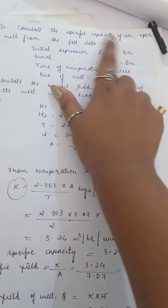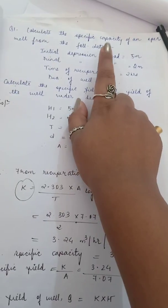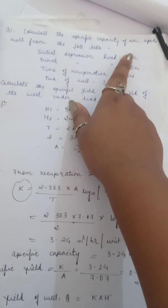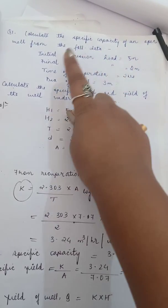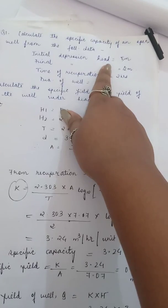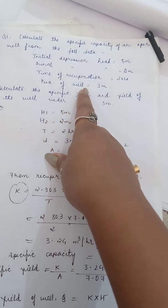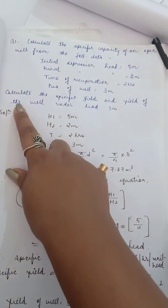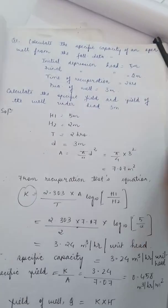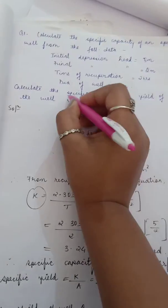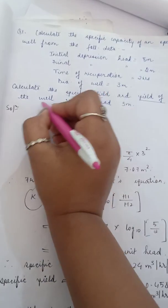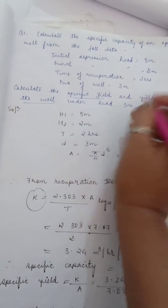The question is: calculate the specific capacity of an open well from the following data. Initial depression head is 5 meters (h1), final depression head h2 is 2 meters, time of recuperation is 2 hours, diameter of well is 3 meters.